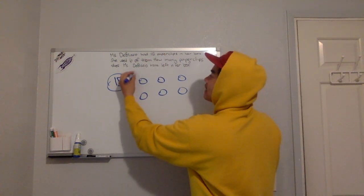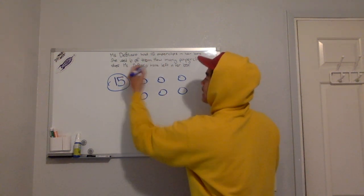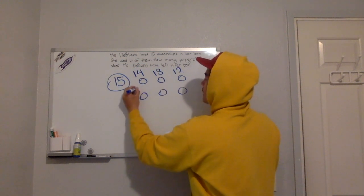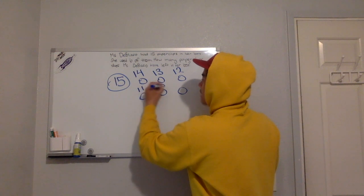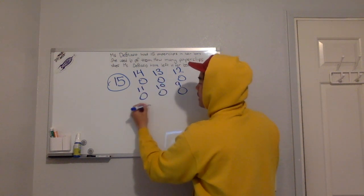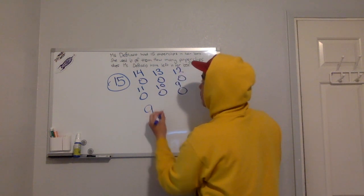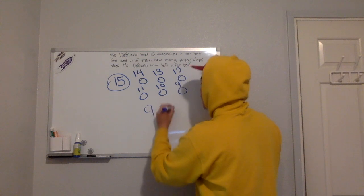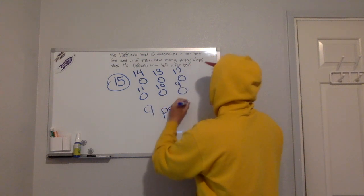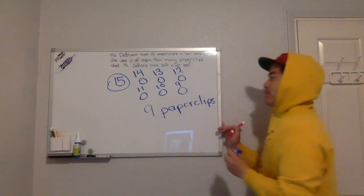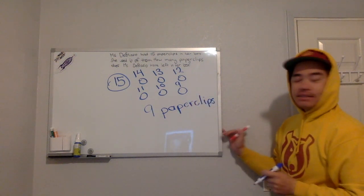So 15, 14, 13, 12, 11, 10, 9. So our answer would be nine paperclips. How many paperclips does she have left? She has nine paperclips. Make sure you label nine paperclips.